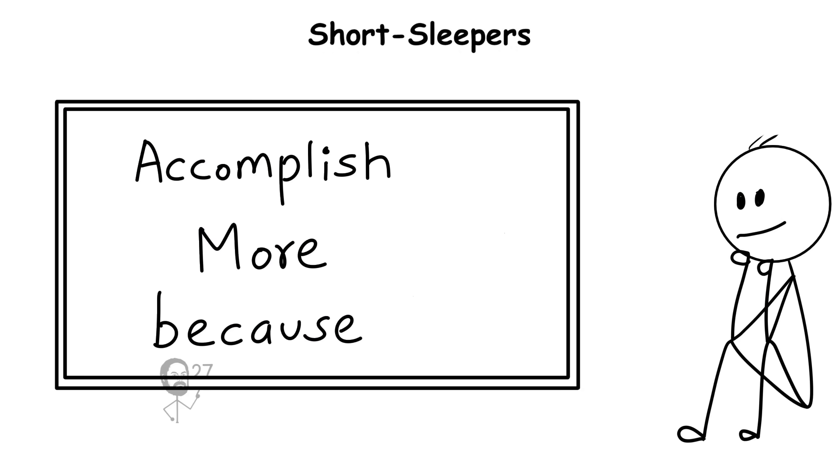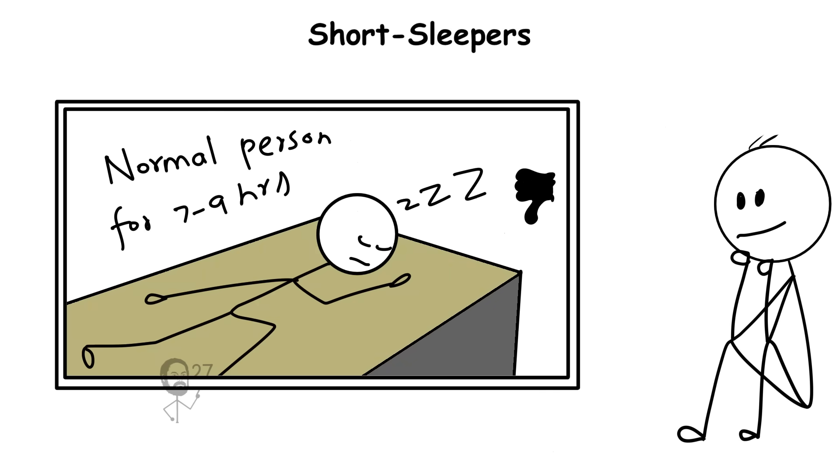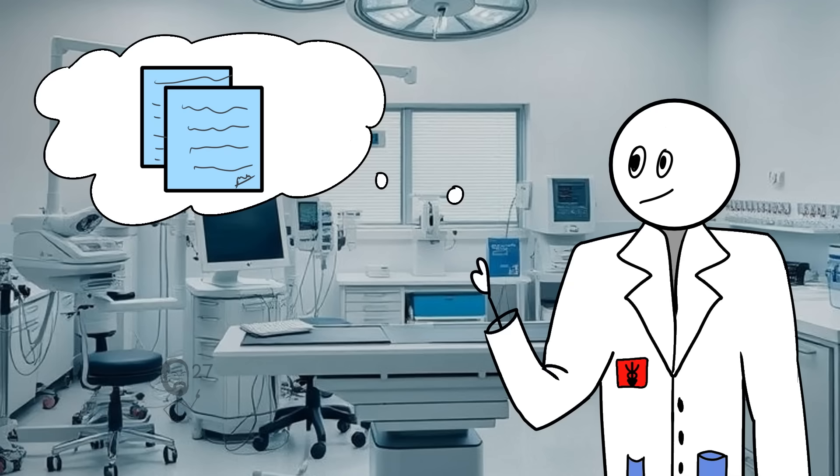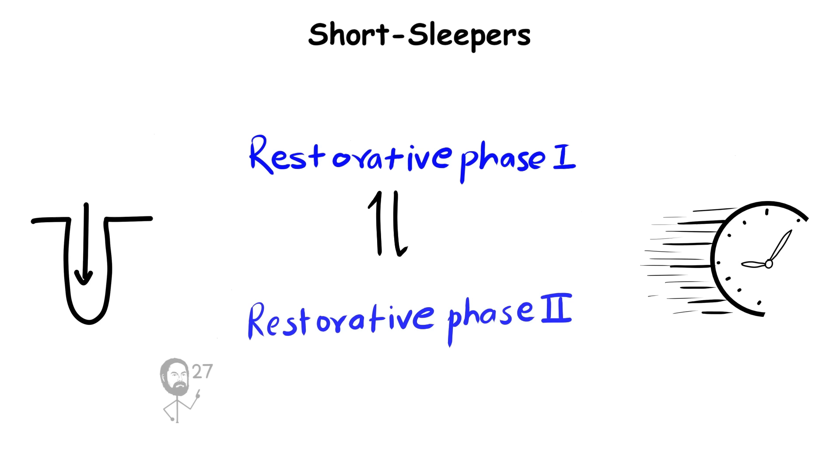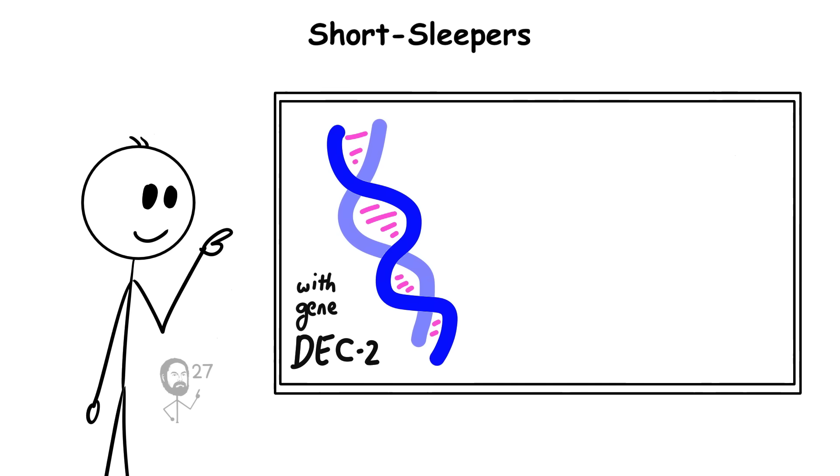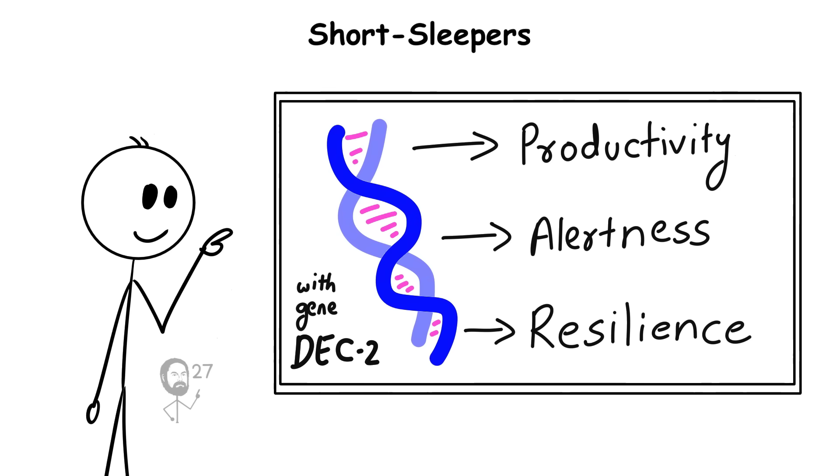And often accomplish more because they have several extra waking hours compared to the average person. Researchers studying these individuals found that their sleep cycles run more effectively, with deeper and faster transitions through restorative phases. In short, their DNA grants them a natural advantage in productivity, alertness, and resilience.